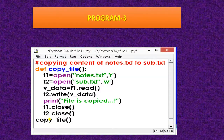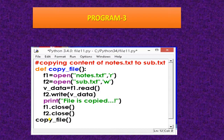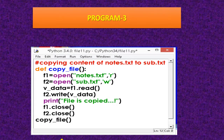Here is the code. I have opened notes.txt in read mode and sub.txt in write mode. Then f1.read() reads the content and stores it in v_data, and then this content is written into the f2 object. This way you can copy the file. This is program three.